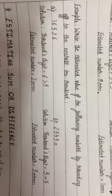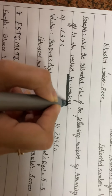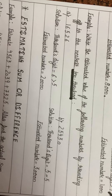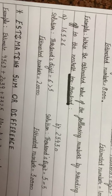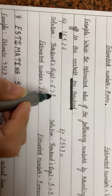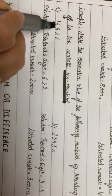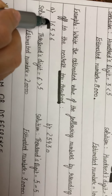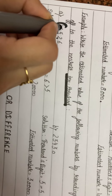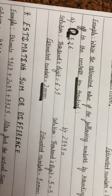Write the estimated value by rounding off to the nearest ten thousand. When rounding to ten thousand, we consider the digit at thousands place. For 16,526 — the thousands digit is 6, which is greater than 5. All digits to the right are replaced by 0, and the ten-thousands digit 1 is increased by 1, giving us 20,000.